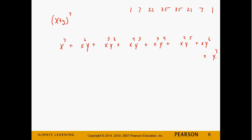Notice that the exponents should always add up to 7: 7+0=7, 6+1=7, 5+2=7, 4+3=7, 3+4=7, 2+5=7, 1+6=7, 0+7=7. Then you just drop in your coefficients: 1, 7, 21, 35, 35, 21, 7, 1. That's it — that's binomial expansion.